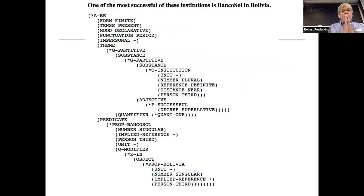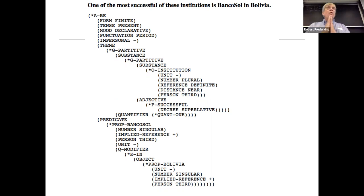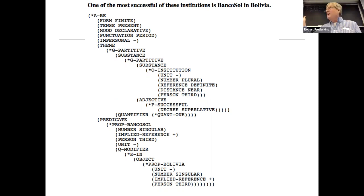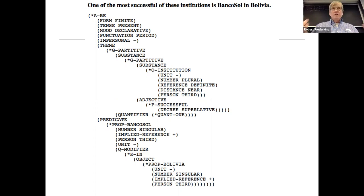Just to show that this can deal with real sentences — ages ago there was a project here that was doing translation by generating these kinds of logical forms for real sentences and then generating sentences in other languages from the logical forms. Sentences like 'one of the most successful of these institutions is Banco Sol in Bolivia' were successfully represented in a very large amount of domain-specific text.